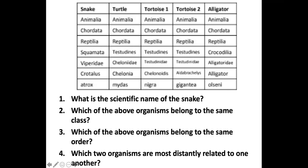So now we're going to talk about dichotomous keys, but before we get into the dichotomous key, this is another piece of classification that you need to be familiar with. If you were to see something very similar to this chart up here, you need to be able to answer questions like this, and you're going to see this also in your activity. Looking up here, it gives us a snake, a turtle, a tortoise one, tortoise two, and an alligator.